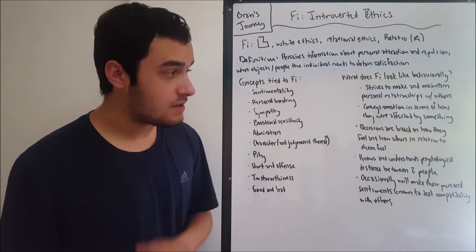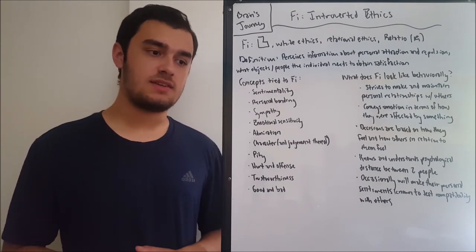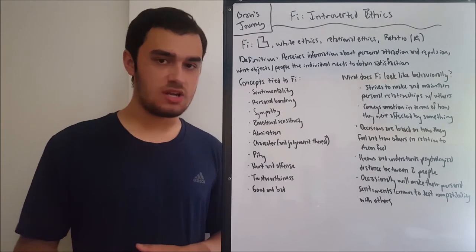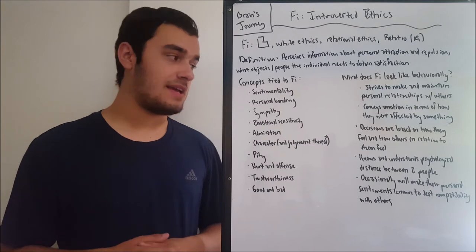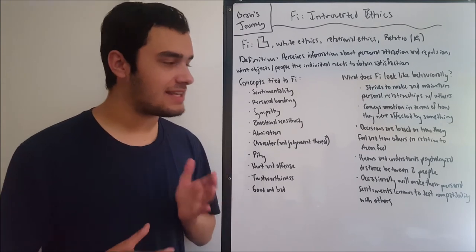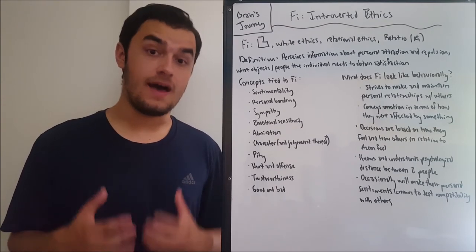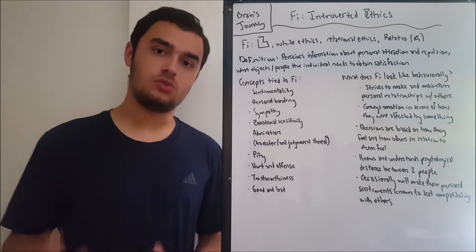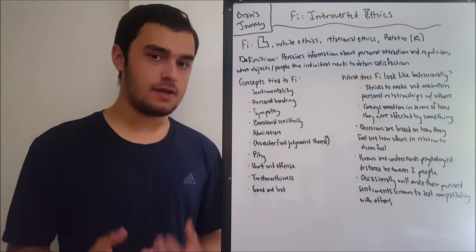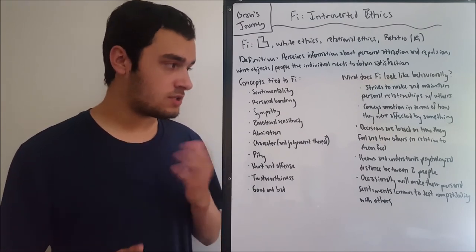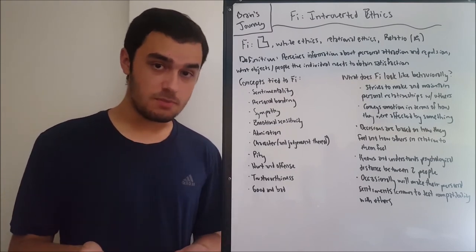Another behavioral trait is that FI conveys information in terms of how it was affected by something. It may say "that's pretty good" or "that's pretty bad," or more personally, "I like this" or "I don't like this" or "this thing makes me feel good/bad." There's going to be a lot of that kind of judgment — whether it occurs in the person's mind or expresses itself in their language — always centered on the subjective observer, the I, the ego.